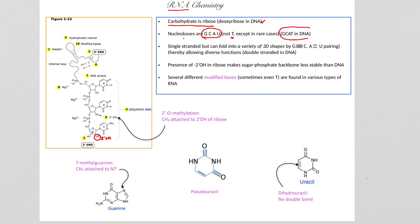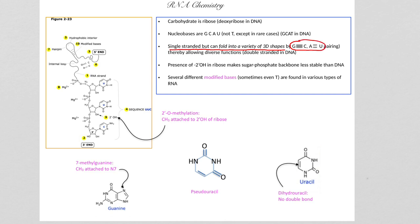Remember, in DNA the nucleobases are G, C, A and T. RNA is single-stranded, unlike DNA which is double-stranded. But this single strand can fold into a variety of three-dimensional shapes by G-C and A-U pairing. So if there was a G on one segment and a C on the other segment, A on one and U on another, we could have pairing resulting in folding of the single strand.